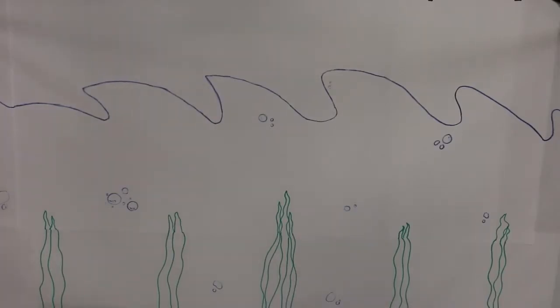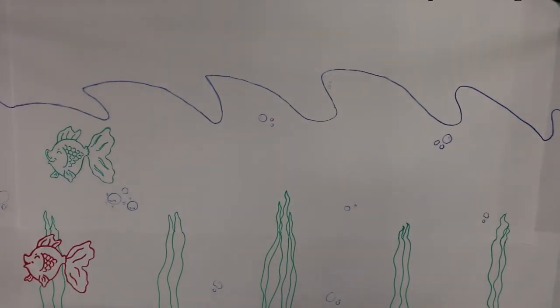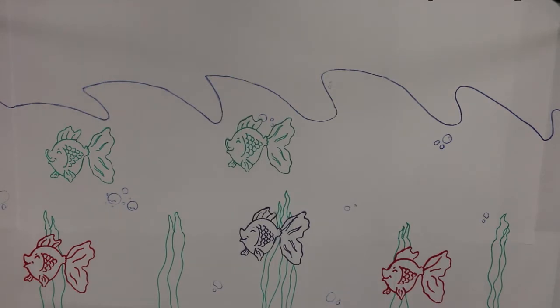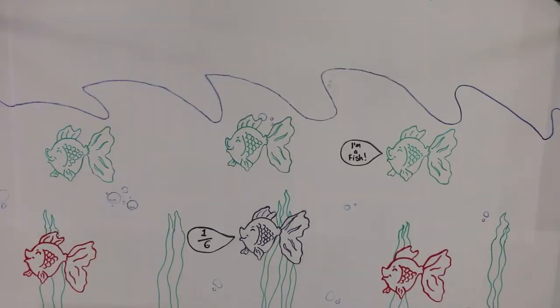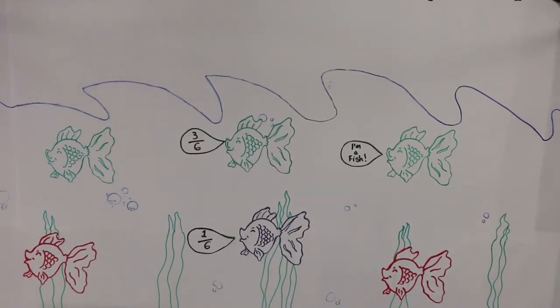Here is an example of using probability. In this pond there are six fish: two red, three green, and one purple. What is the probability that I will catch a purple fish? One sixth. What is the probability that I will catch a green fish? Three sixths or a half. And what is the chance of getting a red fish? Two sixths or one third.